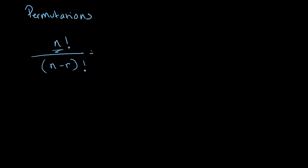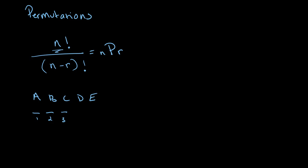Another way of writing this is simply nPr, where n is the number of objects and r is the number of places where we can place those objects. So in the case where we had 5 people, A, B, C, D, and E, and 3 seats, we could write that as 5P3, where 5 is our value for n and 3 is our value for r. This evaluates to 5 factorial divided by (5 minus 3) factorial.